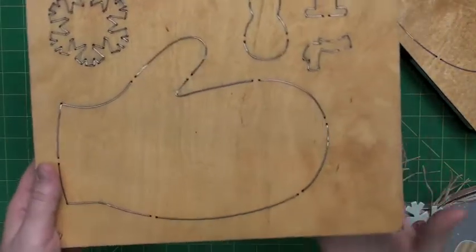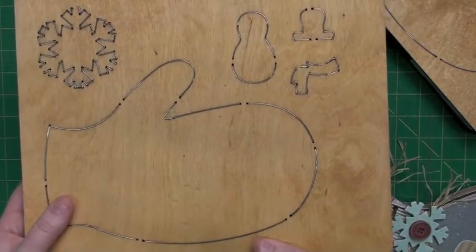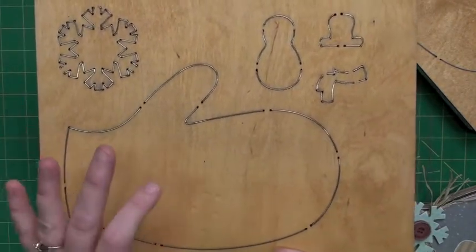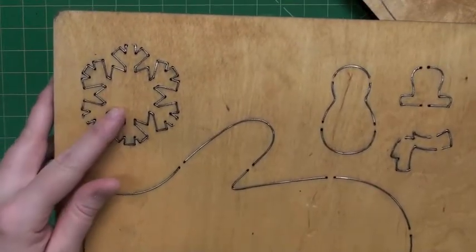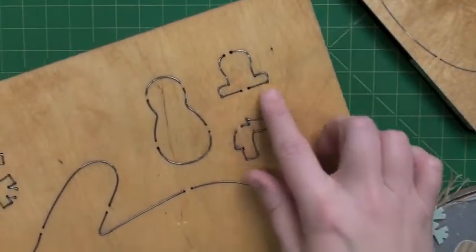And then here is the second die. They're both on jumbo die boards. And so here's the matte and a really awesome snowflake and then a little layering snowman.